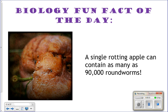Alright, so here's your biology fun fact of the day. A single rotting apple can contain 90,000 roundworms. That's a lot. Now granted, they are small, little bitty worms, but there can be up to 90,000 of them in there. That's not going to be like the apple that's rotting on your counter — that's going to be like an apple that falls from the tree and then the worms crawl up from the dirt into the apple.